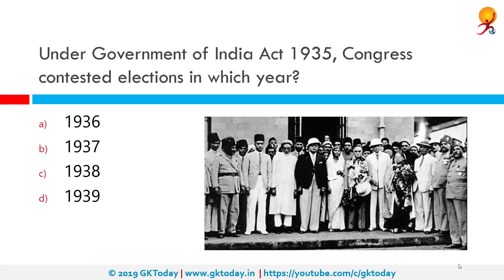Under the Government of India Act 1935, Congress contested elections in which year? The correct answer is 1937. This act ended the system of dyarchy introduced by the Government of India Act 1919 and provided for the establishment of a federation of India, made up of provinces of British India and some or all of the princely states whoever agreed to join. So Congress first contested elections based on this act in 1937.